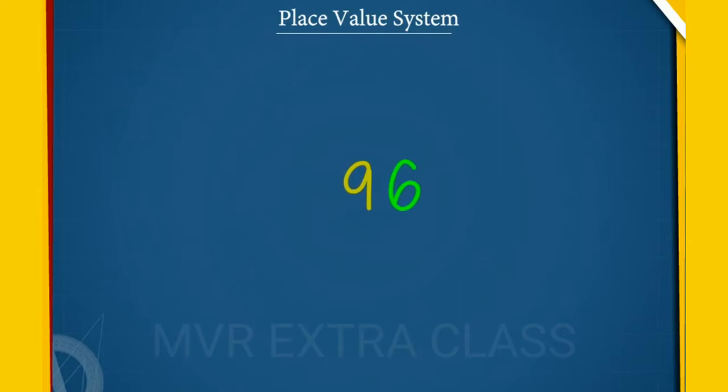Hi students, here is my place value system. 96. In 96, 9 tens are there because 9 is in the tens place.